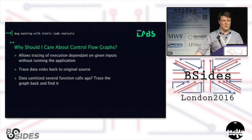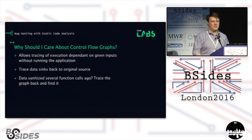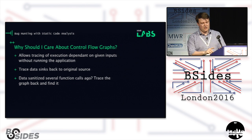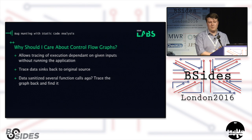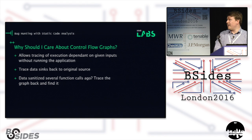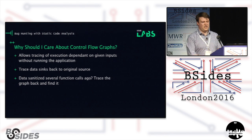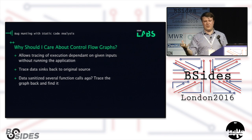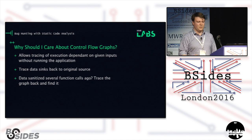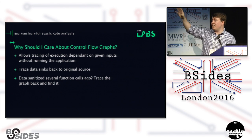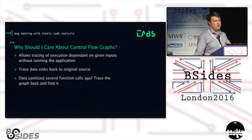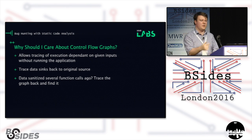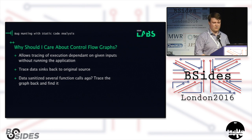Why should you care about control flow graphs? The big powerful thing is it allows you to trace execution without running the application. You can use this with disassembled malware binaries if you're not happy running malware. But also in the context of finding SQL injection, cross-site scripting, and buffer overflows — you can trace the endpoint of data back to where it originally came from. If data was sanitized several function calls ago in another source file, you can trace back up the control flow graph to find whether the data was sanitized between the user inputting it and it being used in the application.